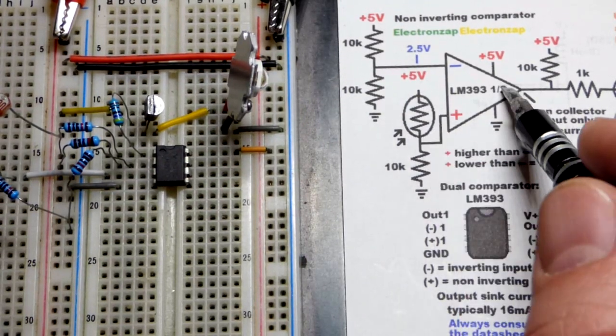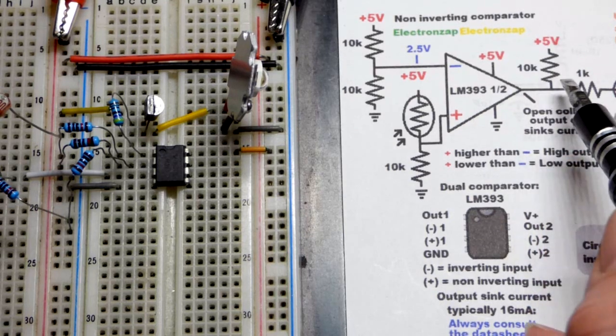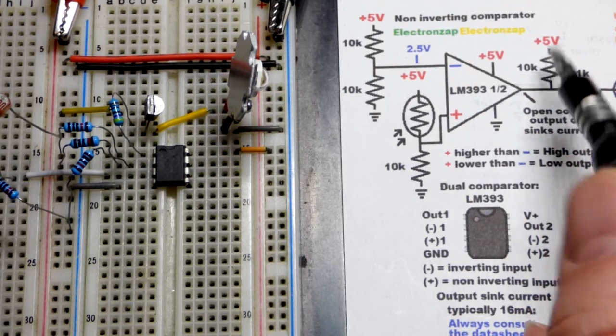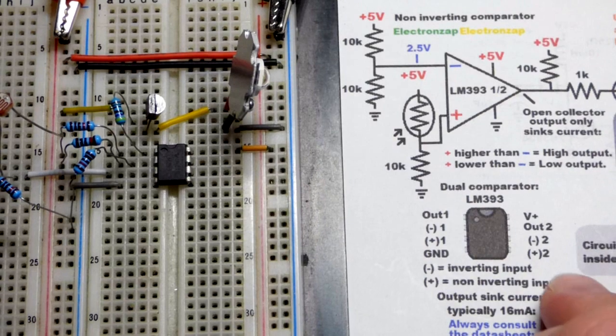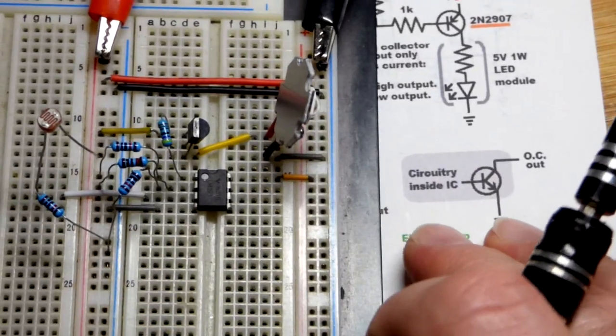Enough light, it basically shuts off. We got our 5 volts going there, which keeps the PNP bipolar junction transistor off. And I'm just going to scoot this over.